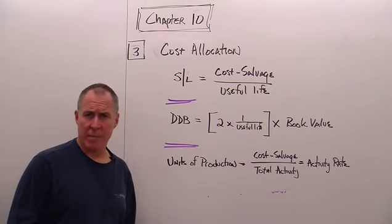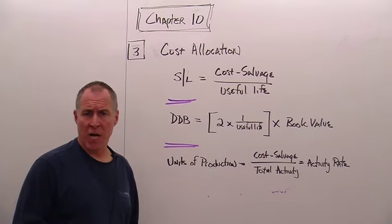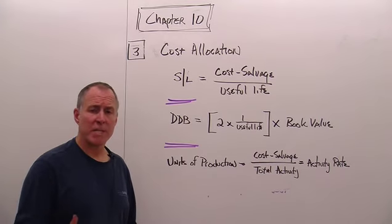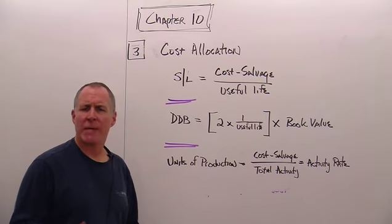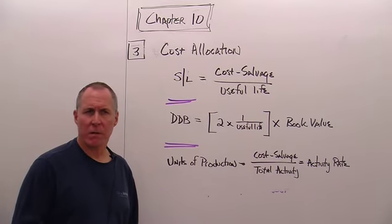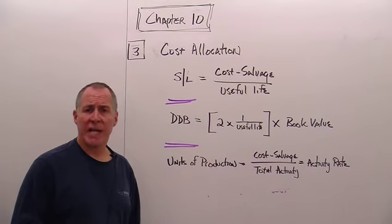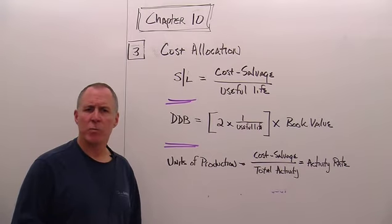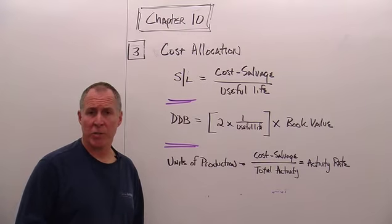The best way is to allocate the cost over the five-year period. What cost are we going to be allocating? This asset cost $7,200, but we expect to get back $1,200 at the end. So there is $6,000 we need to allocate over the five years.